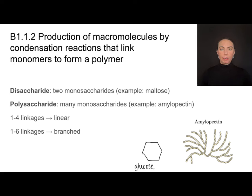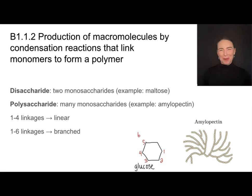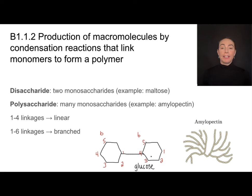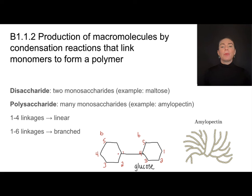Glucose is a six-carbon sugar, and those carbons can actually be numbered. There is also an oxygen in this ring structure. To number the carbons, we number them one, two, three, four, five, and the sixth carbon is actually up here — we generally don't draw that in the ring structure. I can form a bond between the first and the fourth carbon of adjacent glucose molecules, and that's going to give me something called a 1-4 linkage — one referring to the number one carbon here and four referring to the number four carbon on the other glucose molecule.